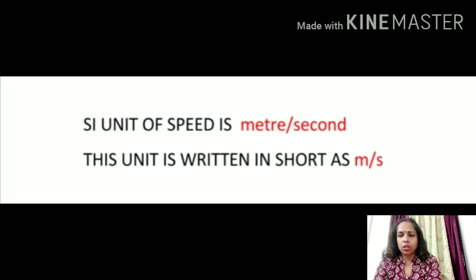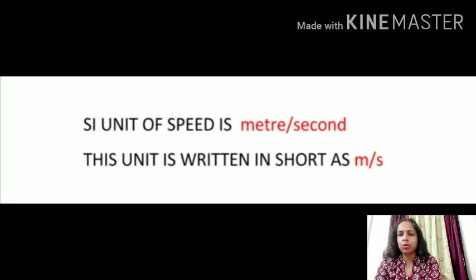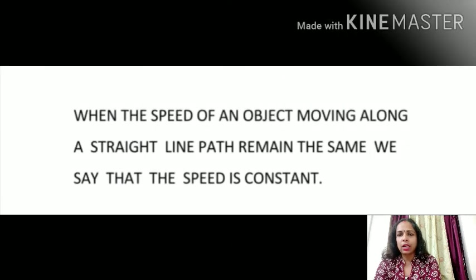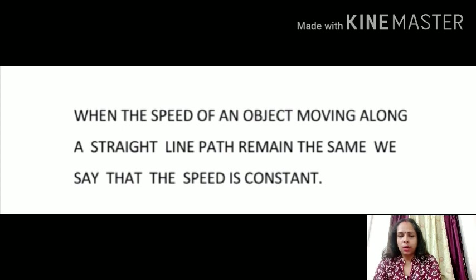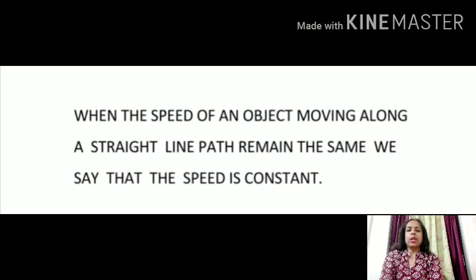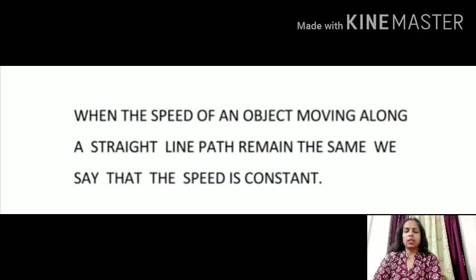This unit of speed in short is written as m/s. If the formula of any physical quantity is known to us and the unit of all the terms involved in that formula is known, we can easily find the unit of that physical quantity. If we say that the speed of a car is 50 kilometer per hour, it means that the car covers 50 kilometer in one hour. We usually consider only the total distance covered by it in one hour.